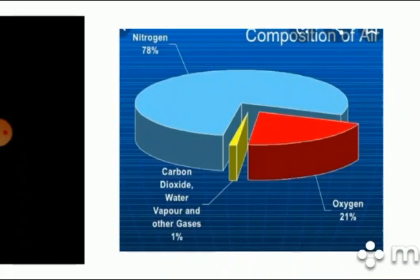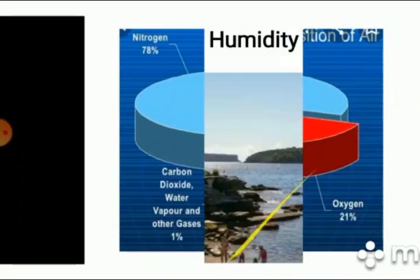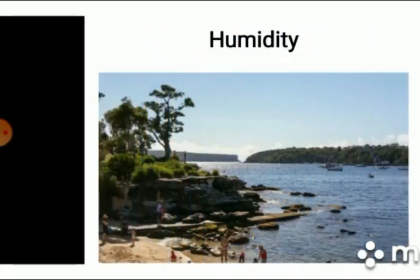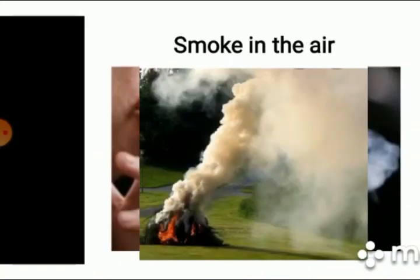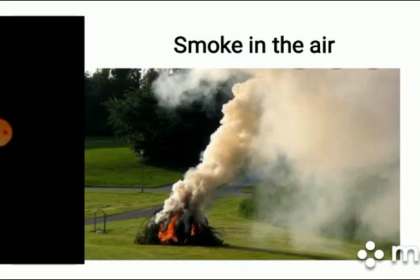And water vapour are in variable amounts. Means the amount of water vapour keep on changing. Like the air near seashore will have more amount of water vapour. Because more water vapour evaporates from sea and make the air moist or humid. Now what is this term humidity? The amount of water vapour in the air is called humidity.